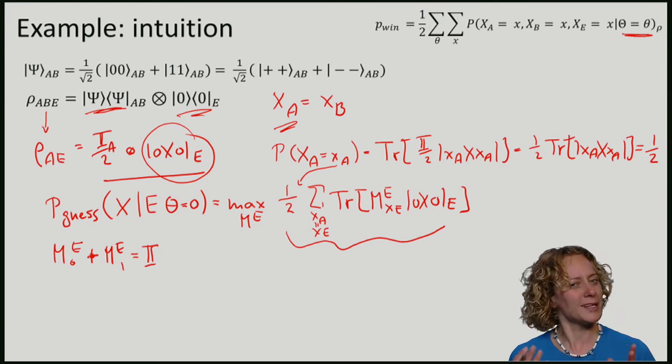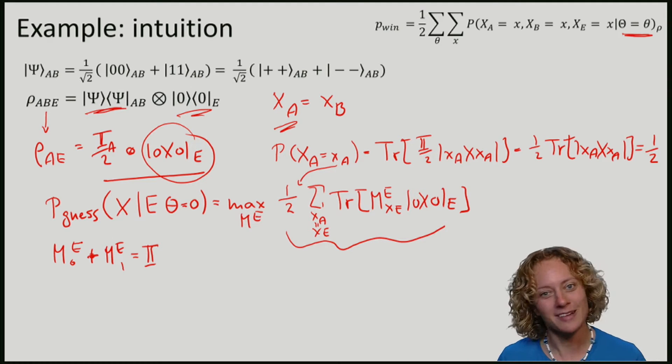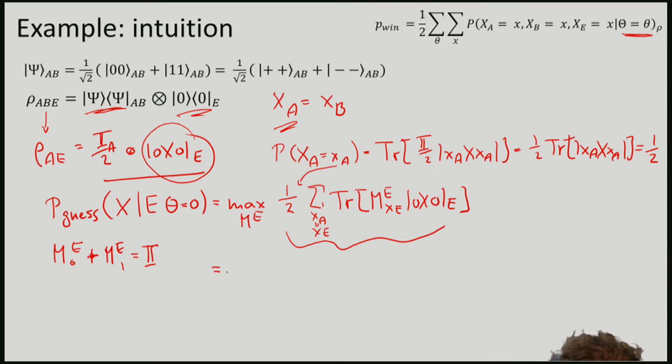this here will be, in fact for any measurement, no matter whether we try to maximize or not, be equal to half times the trace of the identity on zero.